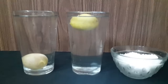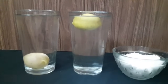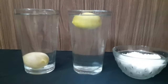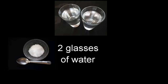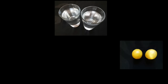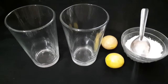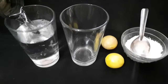Hi friends, today we are going to do an experiment to check the fact that things with lesser density than water or any other liquid float in it. For this we need two glasses of water, common salt, and two lemons. The procedure of this experiment is very simple — to start, fill two glasses with common tap water.